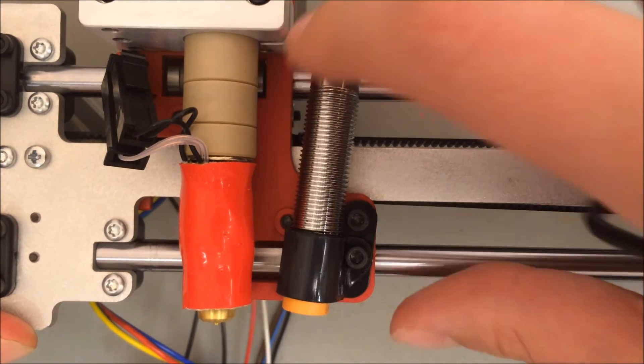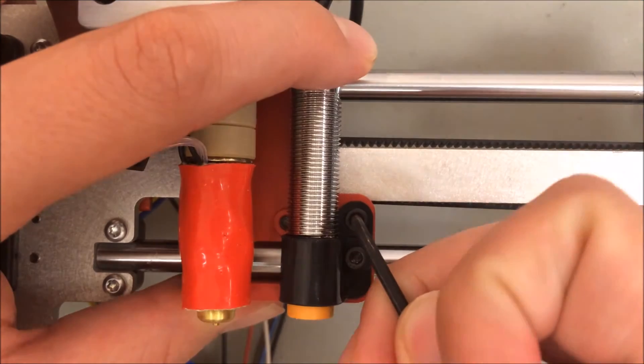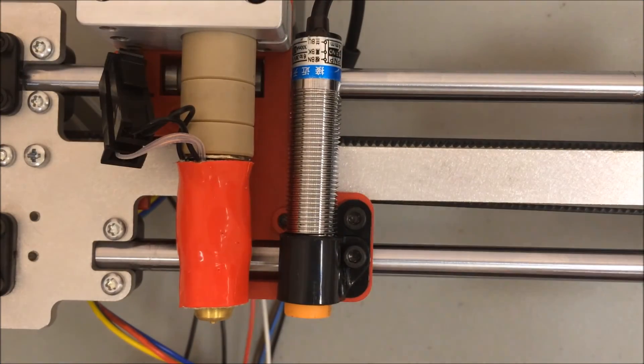If your probe is slanted or moves back and forth like this, your problem is the top screw hasn't been tightened down all the way yet. So straighten out the probe and tighten the top screw.